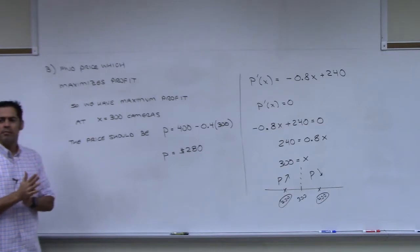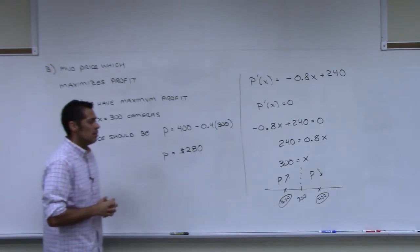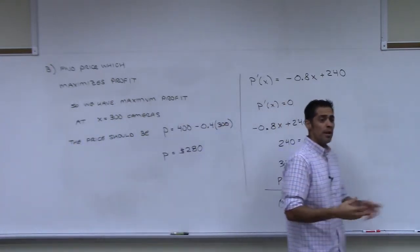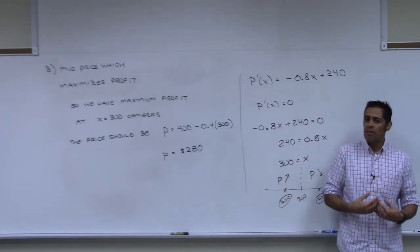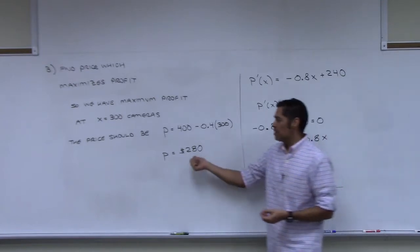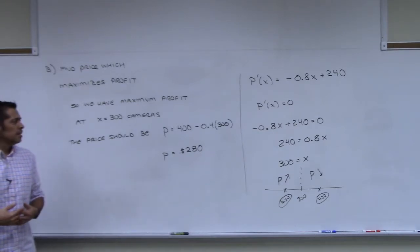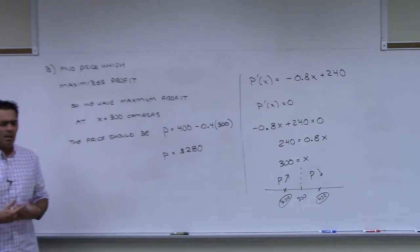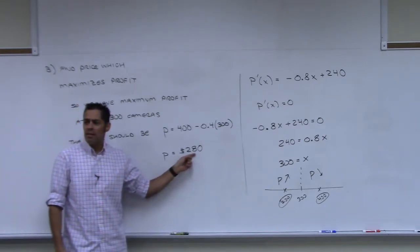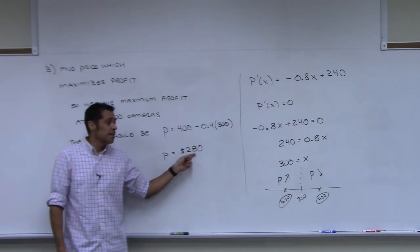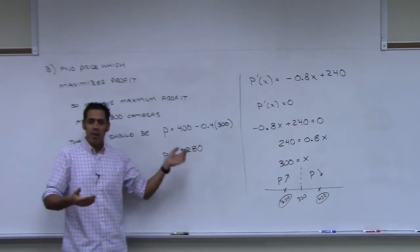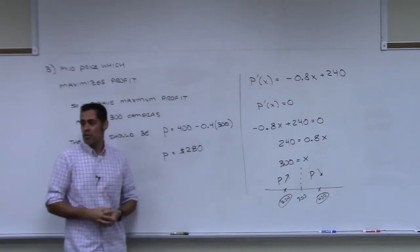We're good with that? What was the answer to part A? How much? 200? So setting the camera price at 200 will bring in the maximum revenue stream, but it will not maximize our profits. Our profits are maximized if we set the price at 280. What's weird about that is that you're going to bring in less money.